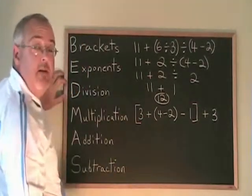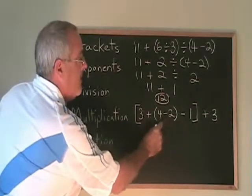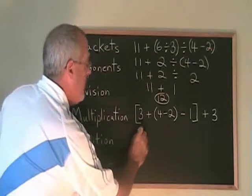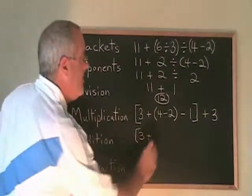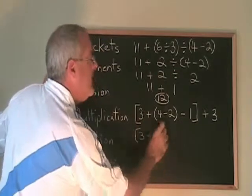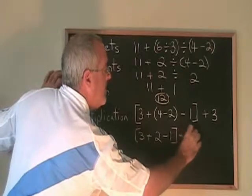When you do nested brackets, you always do the innermost first. The innermost bracket is the 4 minus 2 bracket. So, we will write 3 plus, put the answer to 4 minus 2, which is 2, in place of the bracket, copy down the minus 1, close the bracket, plus 3.